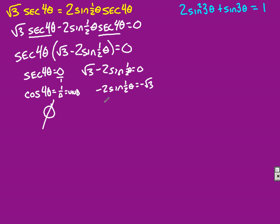Equals negative square root of 3. Divide by negative 2, that means sine of a half theta, equals root 3 over 2. Sine equals root 3 over 2, at 60 degrees, and 120 degrees in quadrant 2.